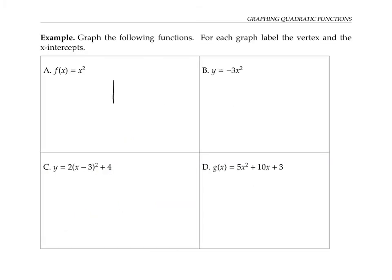The bare-bones basic quadratic function is f(x) = x². It goes through the origin, since f(0) = 0² = 0. It is a parabola pointing upwards. The vertex of a parabola is its lowest point if it's pointing upwards, and its highest point if it's pointing downwards. So in this case, the vertex is at (0, 0).